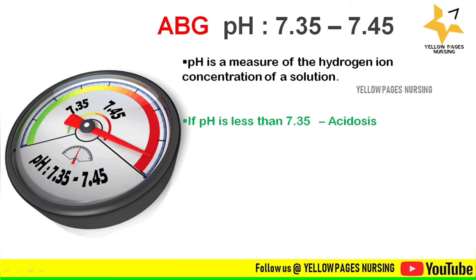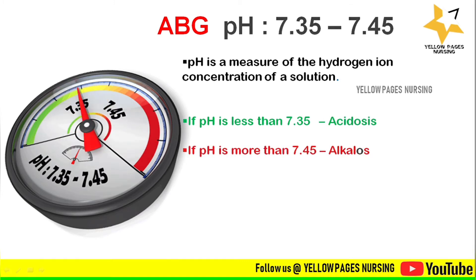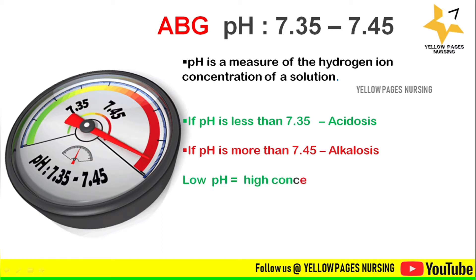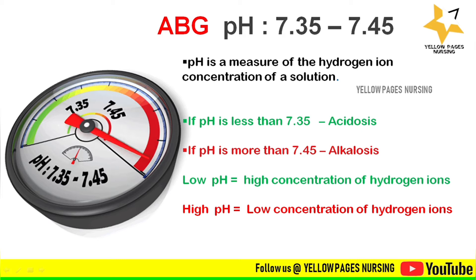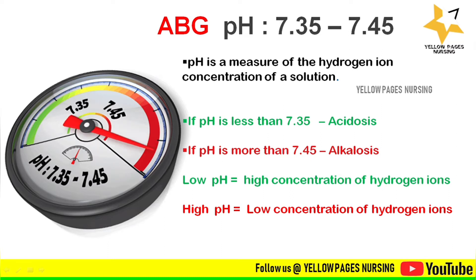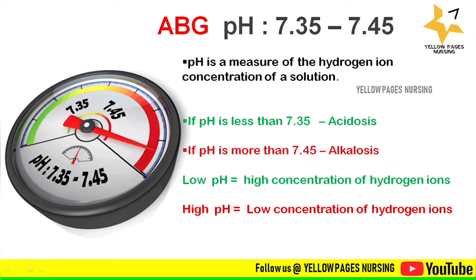When pH falls below 7.35 it indicates acidosis, and when it goes more than 7.45 it indicates alkalosis. In acidosis the hydrogen ion concentration is more, and in alkalosis the hydrogen ion concentration is less. So the basic concept is: if pH is less, it means acidosis where hydrogen ion concentration is more, and when pH is more, it means alkalosis where hydrogen ion concentration is less.